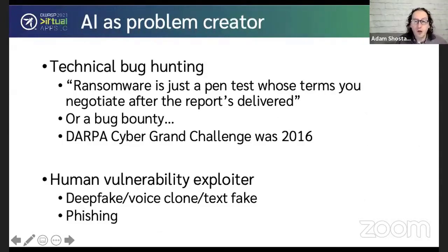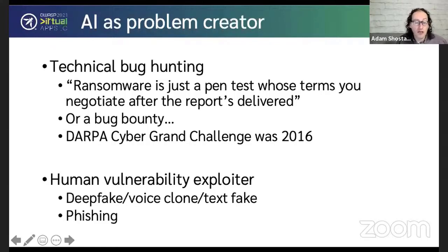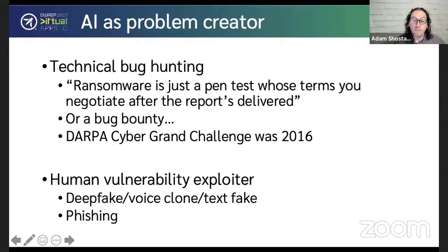I also believe AI is going to be a problem creator for us. There's a great quip: ransomware is just a pen test whose terms you negotiate after the report's been delivered. Or it's a bug bounty whose terms you negotiate after the report's delivered. If AI is going to hunt bugs, different people will have different bug-hunting systems, and some of them will be used at odds with our hopes and intents. DARPA's Cyber Grand Challenge in 2016 had AI systems automatically finding bugs and automatically writing patches for them in a capture-the-flag scenario — and that's five-year-old technology now.